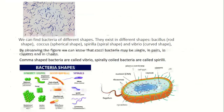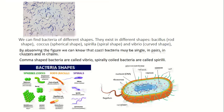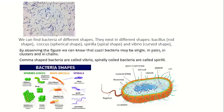Bacteria exist in different shapes. Rod-shaped bacteria are called bacillus; spherical-shaped are called cocci; spiral-shaped are called spirilla; comma-shaped bacteria are called vibrio. Cocci bacteria may be single, in pairs, or in clusters. Spirally coiled bacteria are called spirilli.